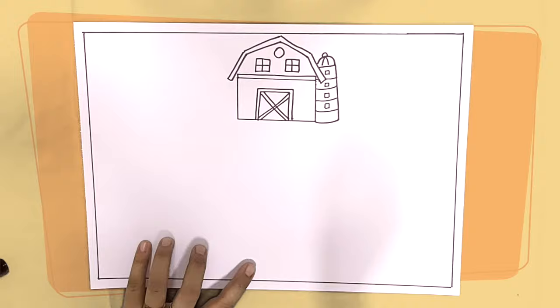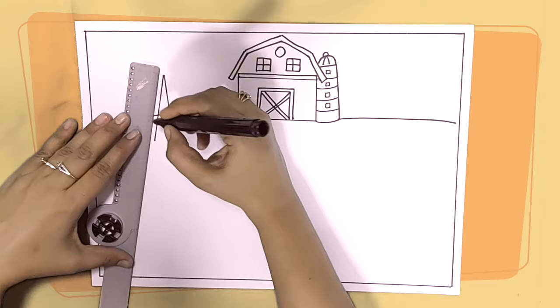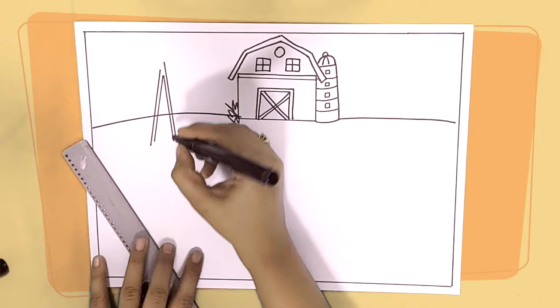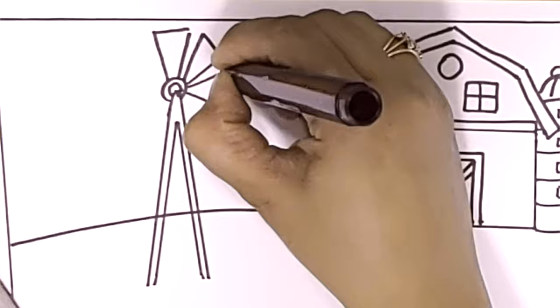With this our barn is done. Then we'll draw a line to have a boundary for our scene. On the left-hand side of the barn I'm drawing a windmill, again with the help of a ruler. Once you have two slanting lines in the shape of a triangle, you can start drawing the blades of the windmill.